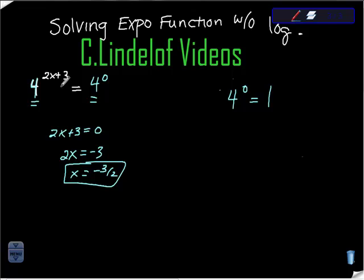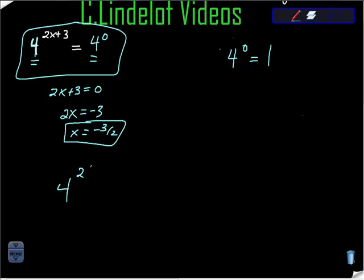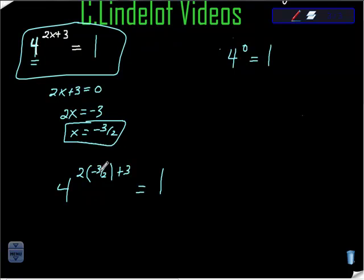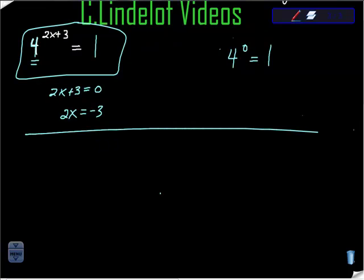Let's verify: 4 to the 2 times negative 3 halves plus 3. That's 2 times negative 3 equals negative 6 over 2, which is negative 3. Negative 3 plus 3 is 0, and 4 to the 0 is 1. It worked. Let's do a couple more examples.